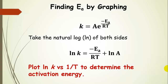We can find the activation energy by graphing. Taking the natural log of both sides of the Arrhenius equation gives a linear equation: ln(K) equals ln(A) — the y-intercept — plus negative Ea over R times 1/T. We run the reaction at different temperatures, measure the rate constant at each, and plot ln(K) versus 1/T to get the slope, which equals negative Ea over R.